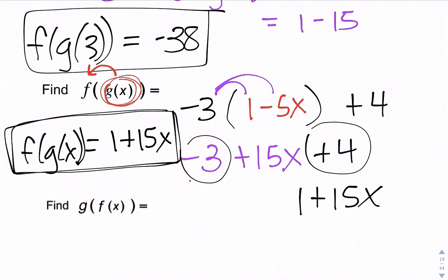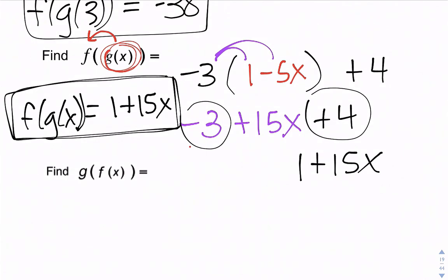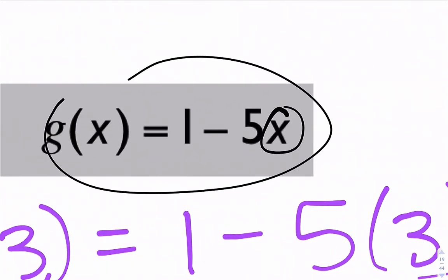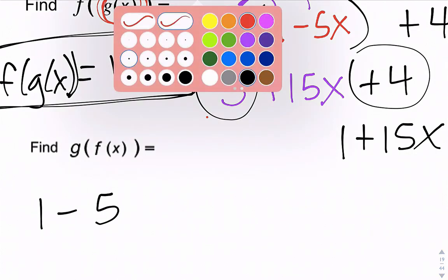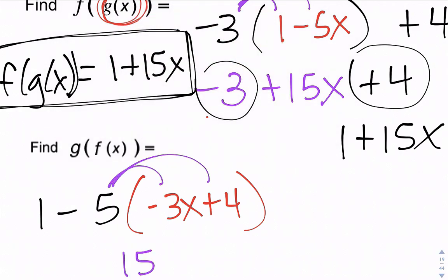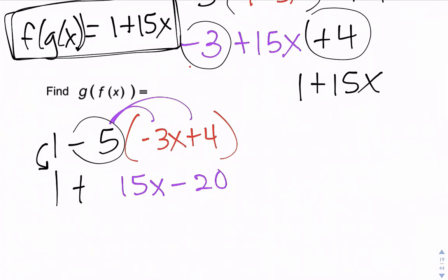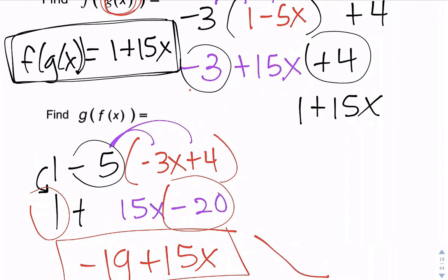Let's try g of f of x. This time we start with the f of x function, negative 3x plus 4, and plug it into the g function for x. We have 1 minus 5 times the quantity negative 3x plus 4. Distributing the negative 5 gives 15x minus 20, and we still have the 1 in front. So it's 1 plus 15x minus 20. Combining like terms gives negative 19 plus 15x. So if you plug one function into the other, you distribute and combine like terms.